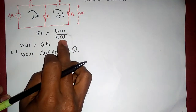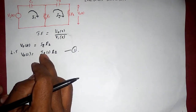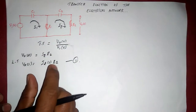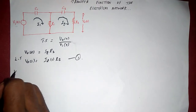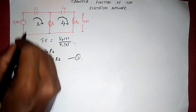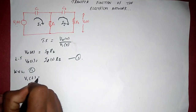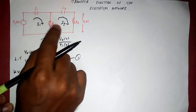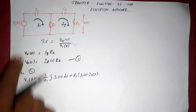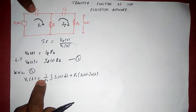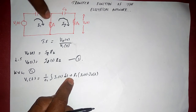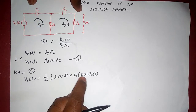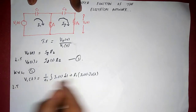I want to find V0(s) in terms of I2(s). So I am going to solve two mesh equations. Applying Kirchhoff's voltage law in Mesh 1: the potential rise equals the sum of potential drops. There are two elements — capacitance C1 and resistance R1, which is common between meshes 1 and 2. In Mesh 1: V1(t) = (1/C1)·∫I1(t)dt + R1·(I1(t) − I2(t)).